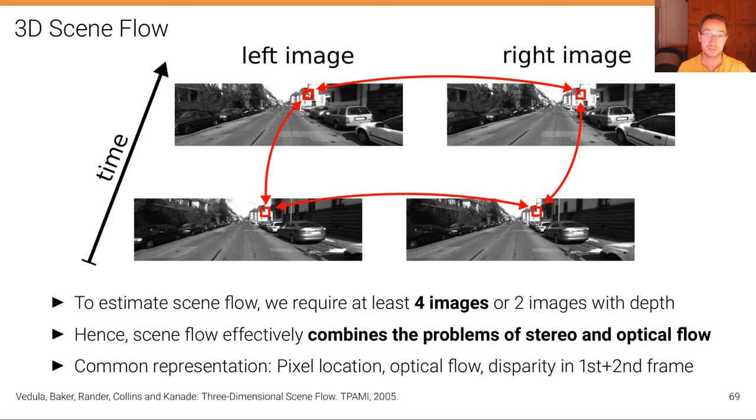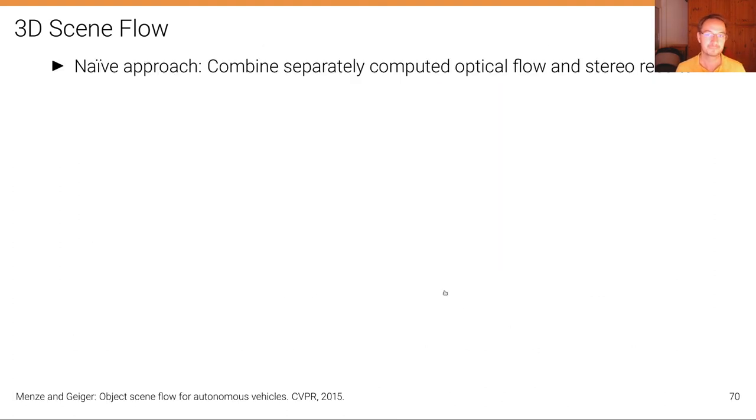which has six degrees of freedom as we have two degrees of freedom for the pixel location, two degrees of freedom for the optical flow and two degrees of freedom for the two disparities.